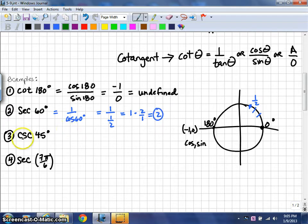For cosecant, remember that that is the reciprocal of sine. We're going to do 1 over the sine of 45. Again, using the unit circle, if we're here at 45 degrees, we know that the sine is the square root of 2 over 2.